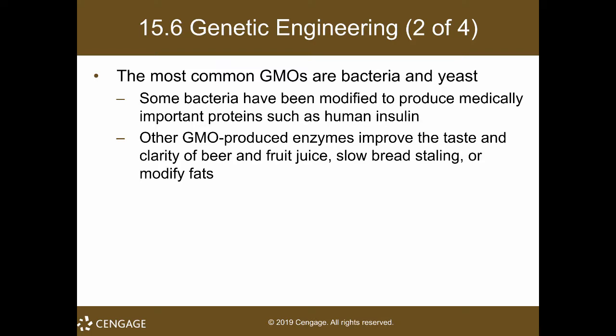Some bacteria have been modified to produce medically important proteins such as human insulin. Before this, the original source of insulin was pigs — they would get insulin from slaughtered pigs. Since pig protein is a little bit different from human protein, there is a chance of adverse immune reactions.